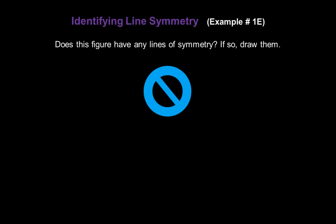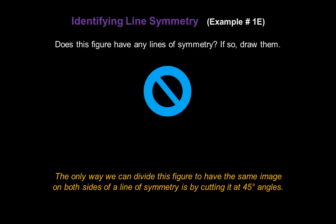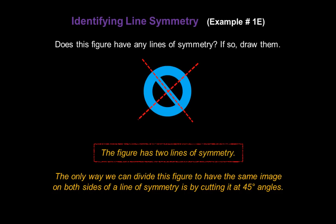Does this figure have any lines of symmetry? If so, let's draw them. The only way we can divide this figure to have the same image on both sides of a line of symmetry is by cutting it at 45-degree angles, like this and this. So this figure has two lines of symmetry.